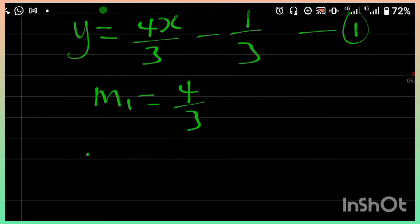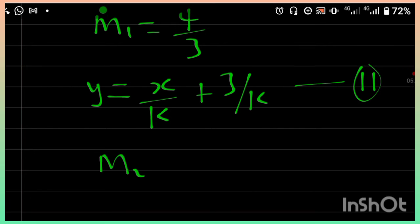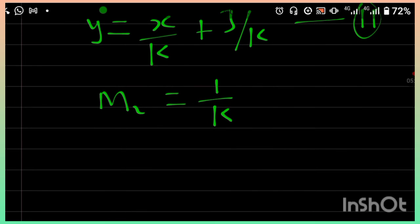And in equation 2, I have y is equal to x over k plus 3 over k, equation 2. Therefore, the slope of this equation 2, m2 will be equal to 1 over k.